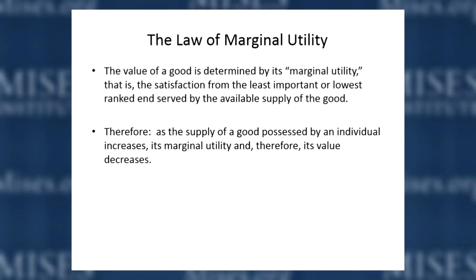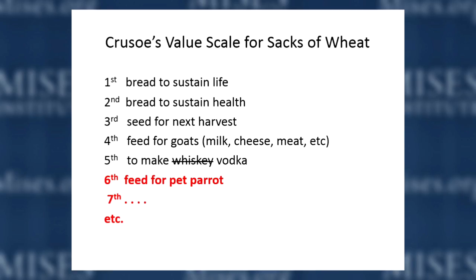The law of marginal utility, as Austrians state it, is that the value of a good is determined by its marginal utility — the satisfaction from the least important or lowest-ranked end served by the available supply of the good. Another way of putting it: as the supply of a good that an individual possesses increases, its marginal utility and therefore its value decreases. Menger used the example of an isolated individual — Robinson Crusoe — on an island with five bushels of wheat to satisfy his wants.